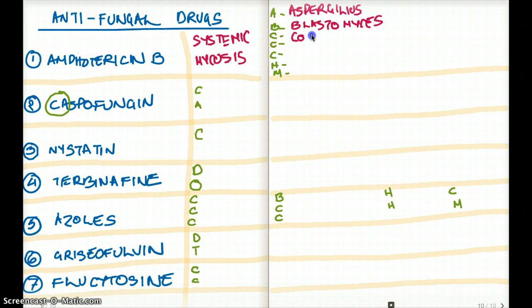C is for coccidioides. The other C is for candida. And this C is for cannot cross blood-brain barrier. H is going to be for histoplasma. And M is going to be for mucor. So those are the clinical uses for amphotericin B.